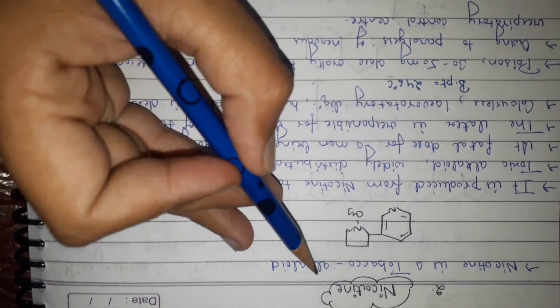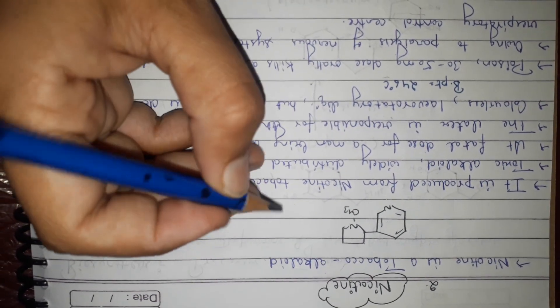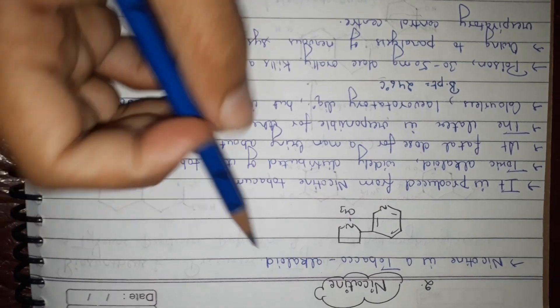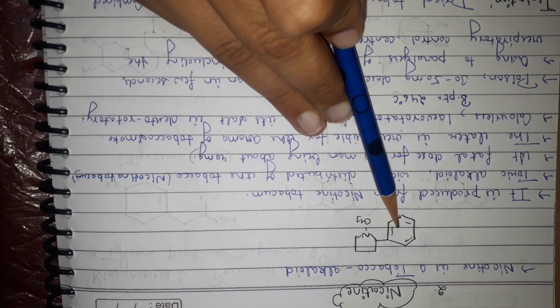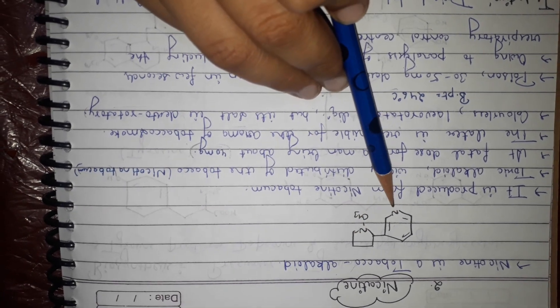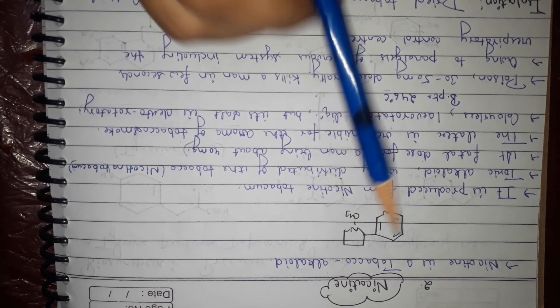Welcome to MSc Chemistry. Today's topic is nicotine. Nicotine is a tobacco alkaloid found in tobacco. The structure of nicotine consists of one pyridine and one pentane ring, with two nitrogen atoms and one methyl group.